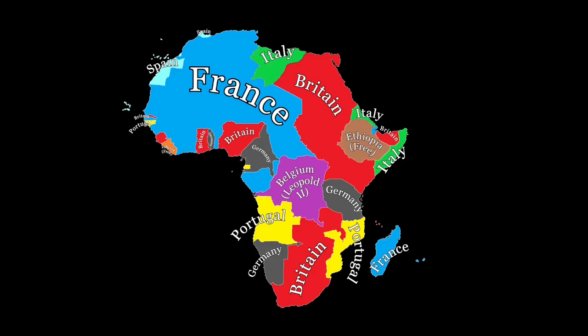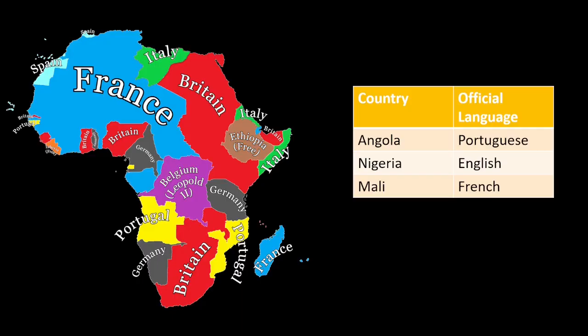We can see this reflected in Unit 6 by how cities are laid out in Africa. Now, cultural traits from Europe have diffused to Africa through a variety of diffusion types.